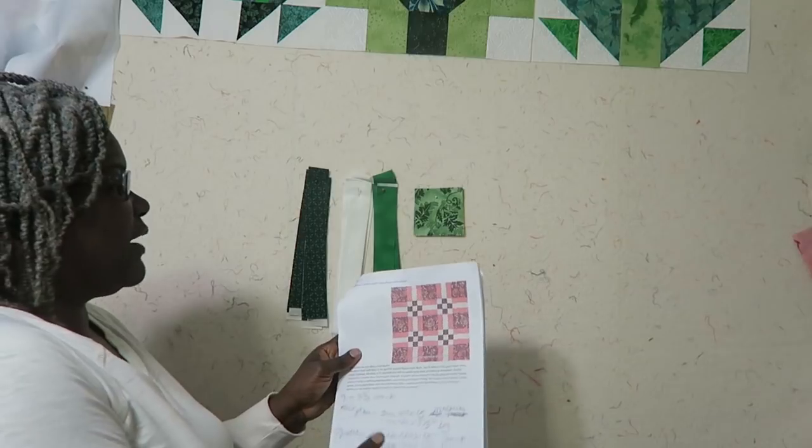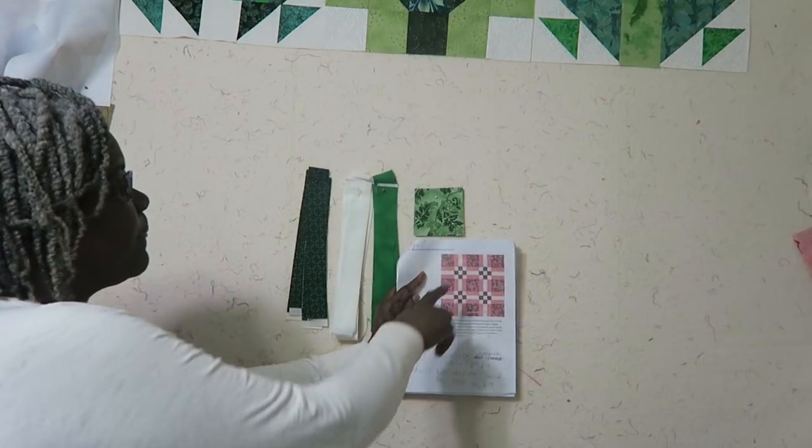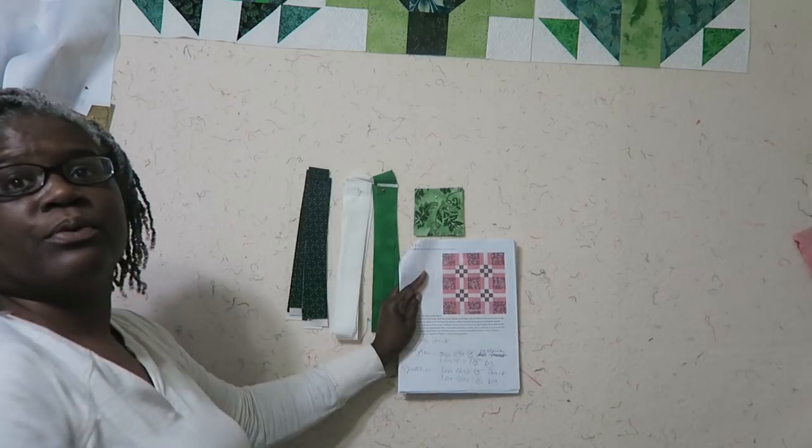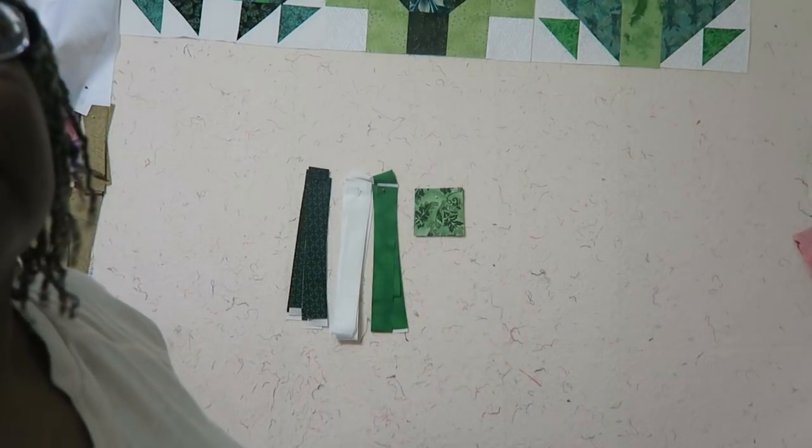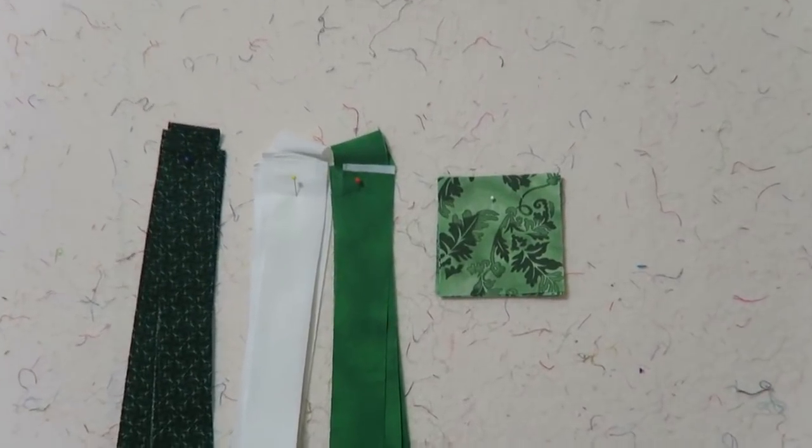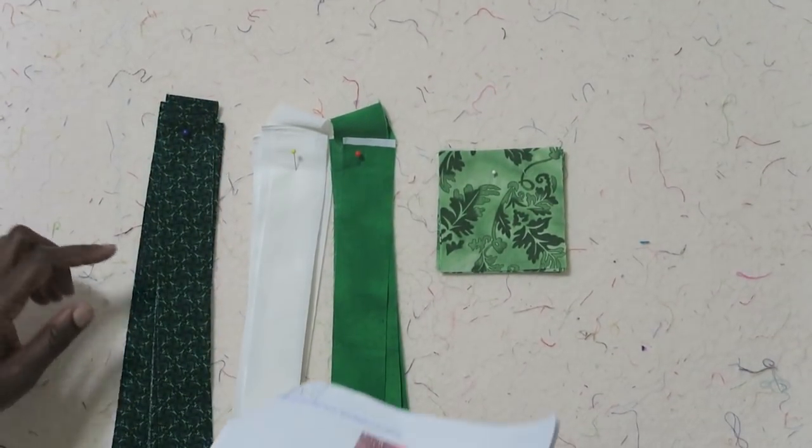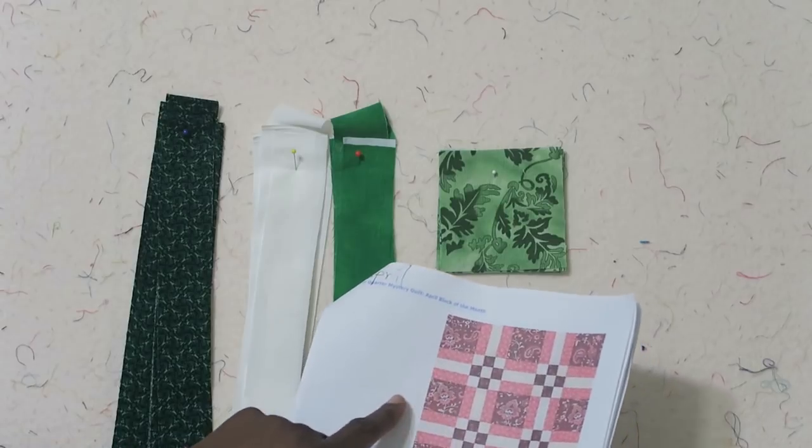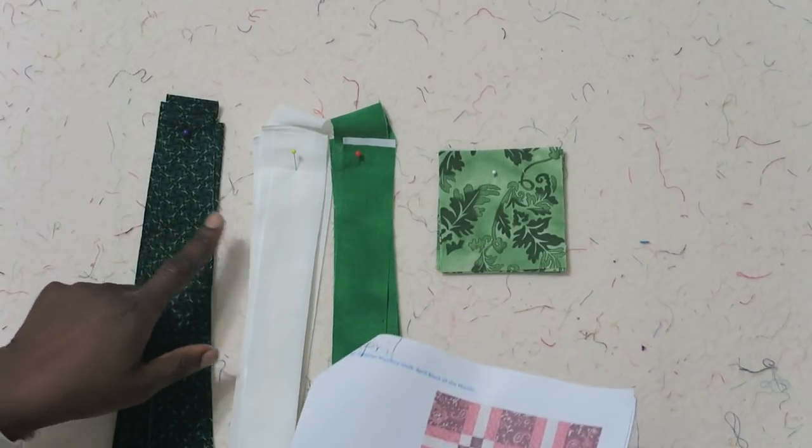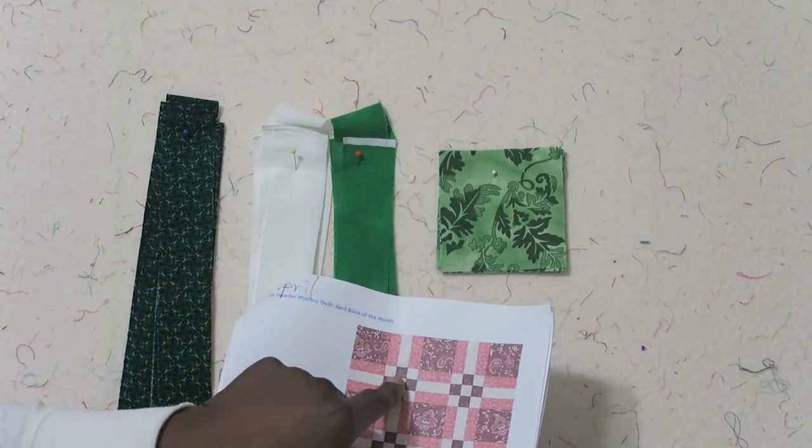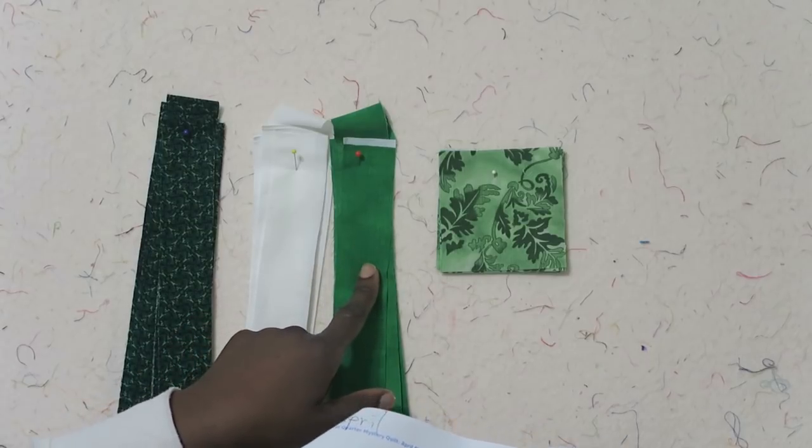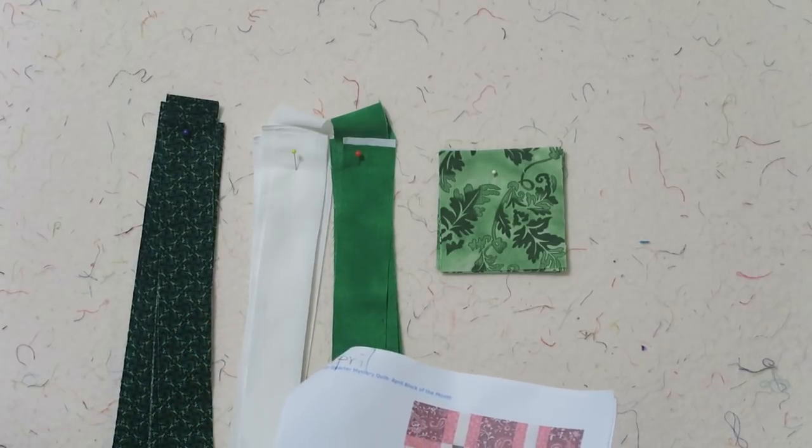So I have my fabrics already picked out. For my nine print squares I am using this green print here. Let me zoom in so you can see a little better. And then for my rail fence blocks I'm going to be using this darker green with the white, and then for my nine patch blocks I'm going to be using the background fabric with the medium shade of green.